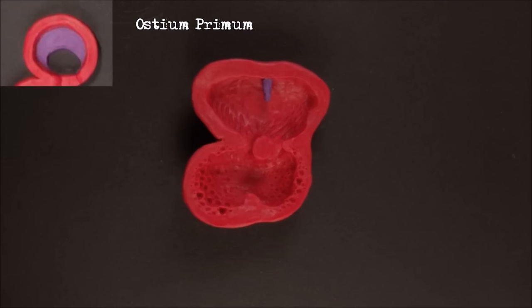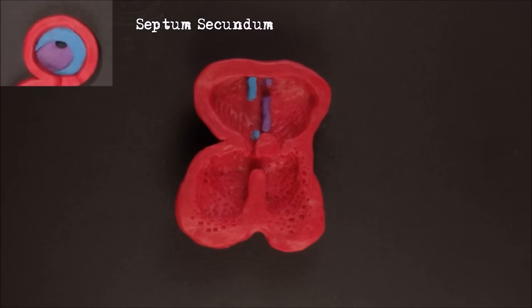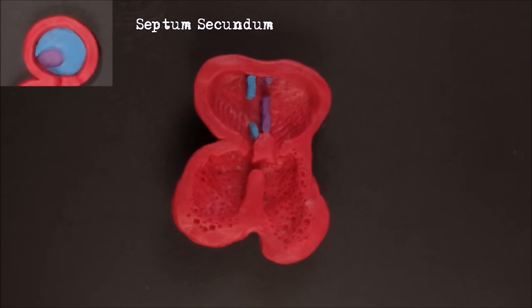Before the septum primum completely blocks off the flow of blood between the atria, a second hole forms higher up in the septum called the ostium secundum. A second wall starts to grow down from the roof of the atrium, shown here in blue. This is the septum secundum, the second wall.